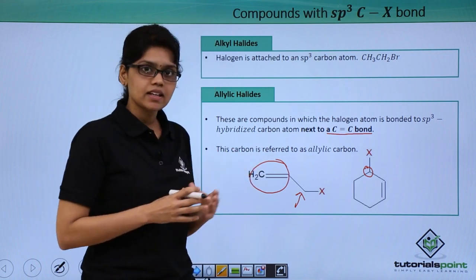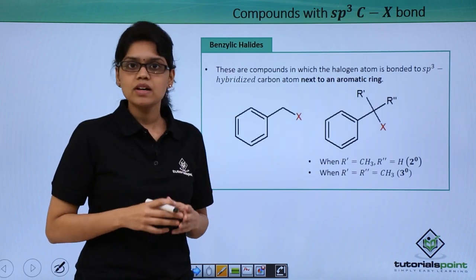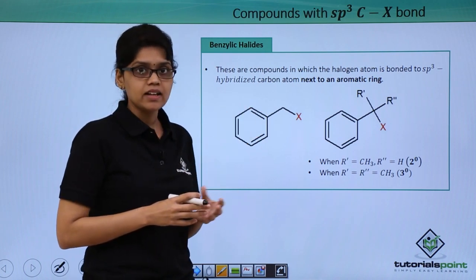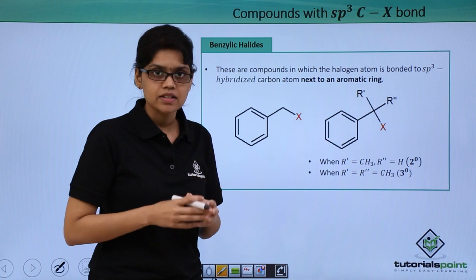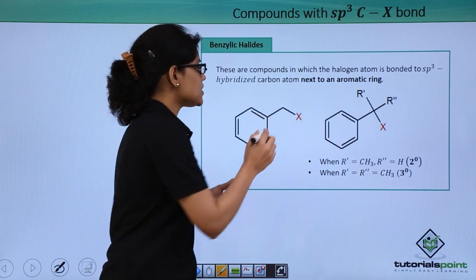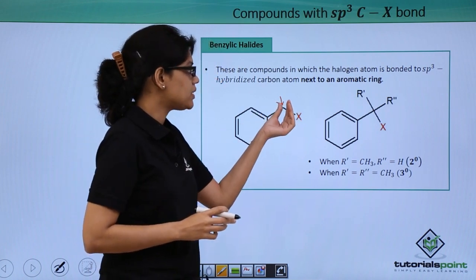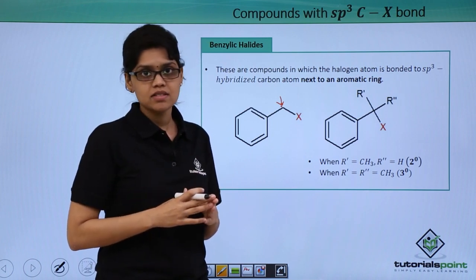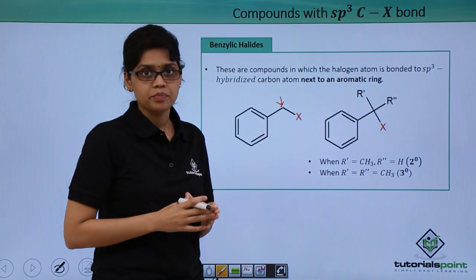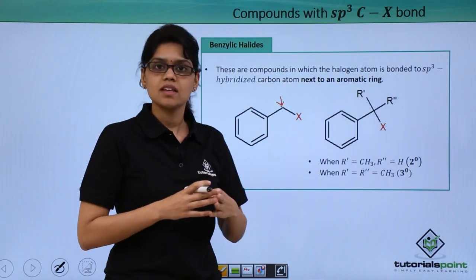Just as we have seen with allylic carbon atoms, the third class of compounds called benzylic halides also has a similar structure. In benzylic halides, the carbon bearing the halogen atom is adjacent to a benzene system — that particular carbon atom is called a benzylic carbon atom. The carbon attached to the halogen has sp³ hybridization state while being adjacent to a benzene ring. So the three classes of compounds classified under sp³ C-X bond are alkyl halides, allylic halides, and benzylic halides.